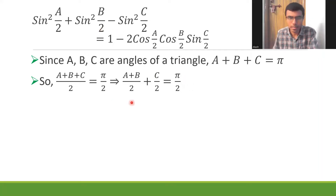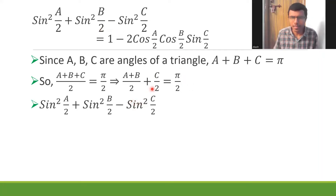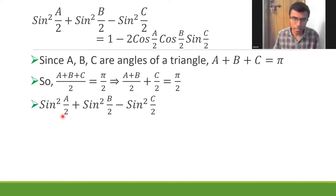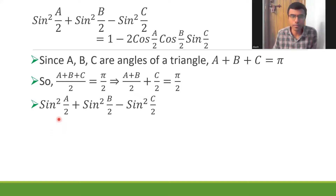Now let's take the LHS and get started. I generally like to work with a and b. Here I'll use the formula sin²A - sin²B = sin(A+B)·sin(A-B). You could start with b and c — that's totally fine — but I prefer a and b. What I want is something like cos²(a/2) - sin²(b/2), so that I can apply the formula cos²A - sin²B = cos(A+B)·cos(A-B).